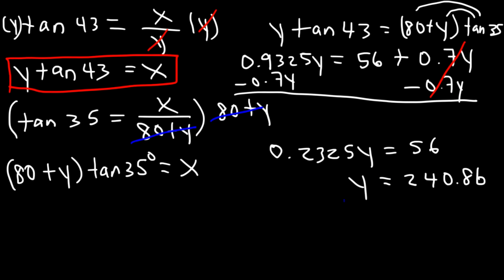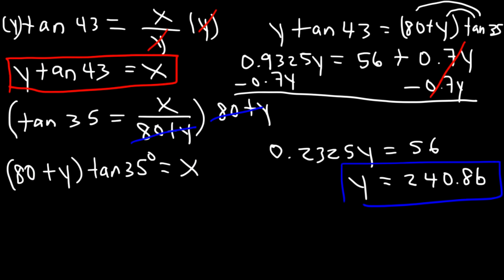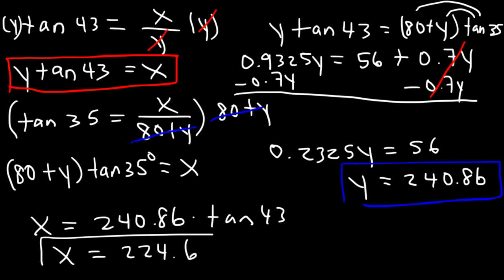Now that we have y ≈ 240.86, we can use the first equation to find x: x = y × tan(43) = 240.86 × tan(43) ≈ 224.6. That's the answer we're looking for.